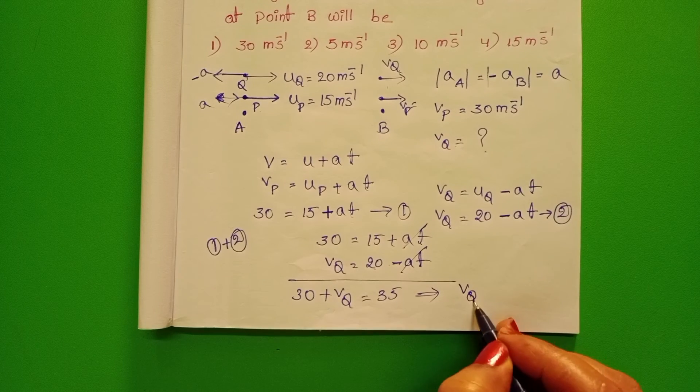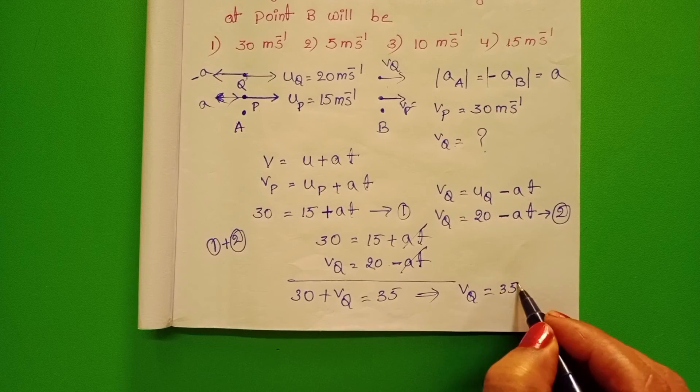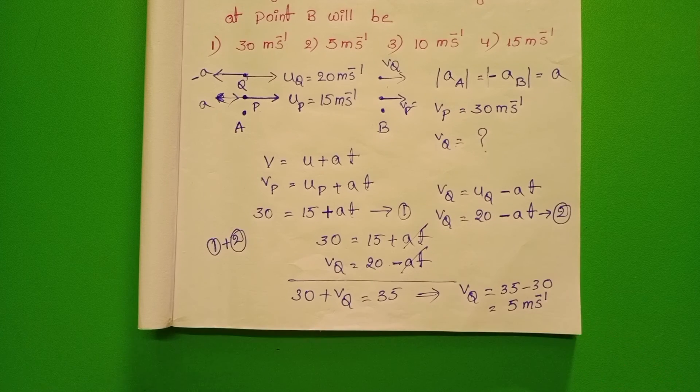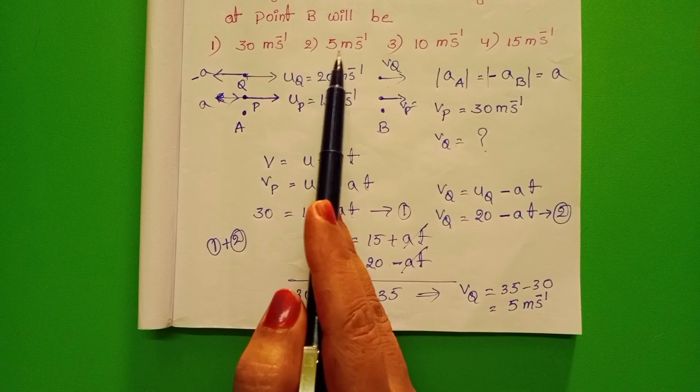Then final velocity of Q is equals to 35 minus 30. That is equals to 5 m per second. Second option is correct.